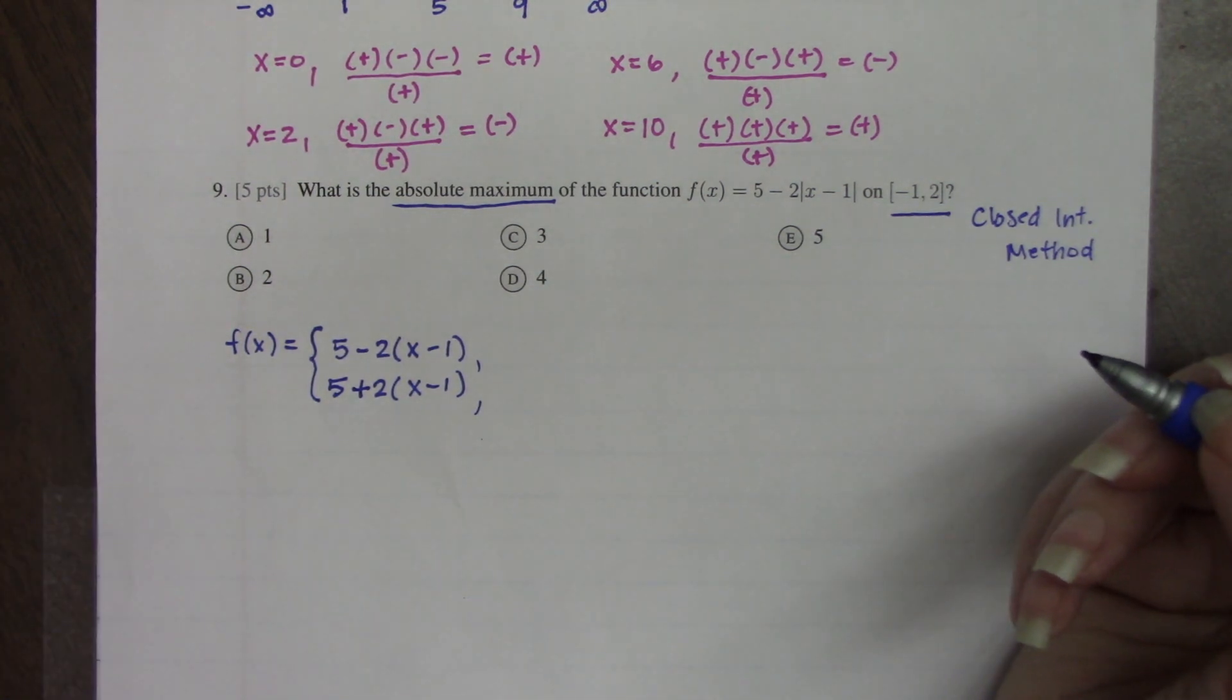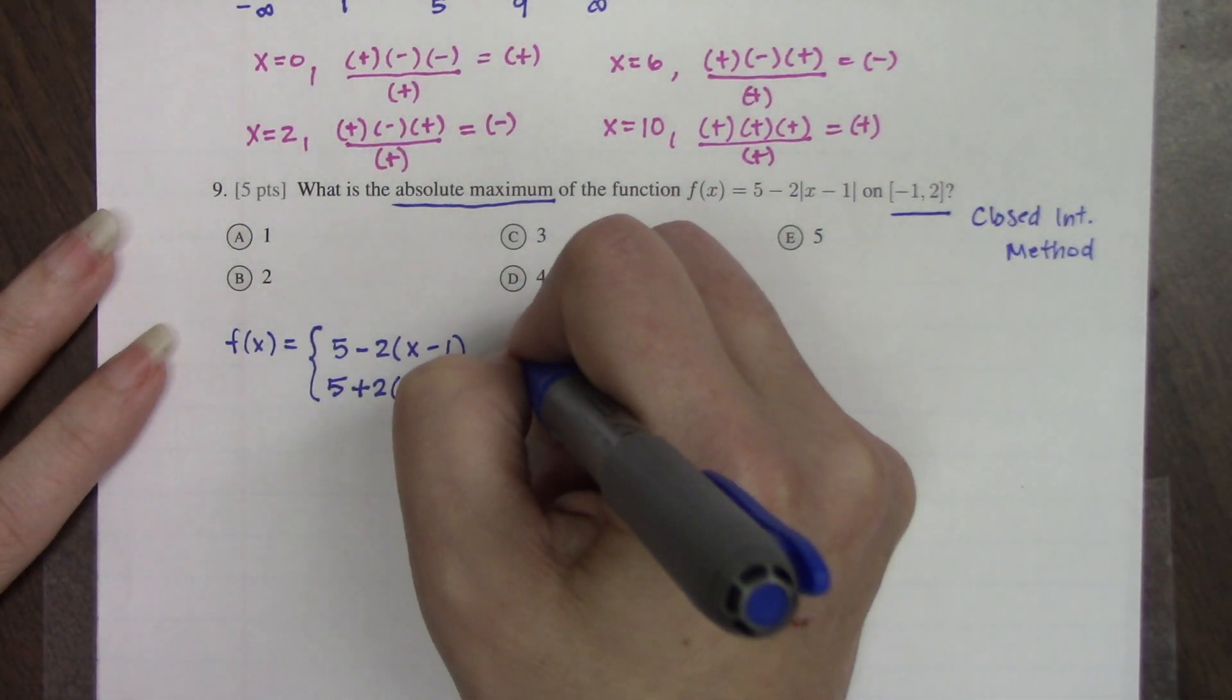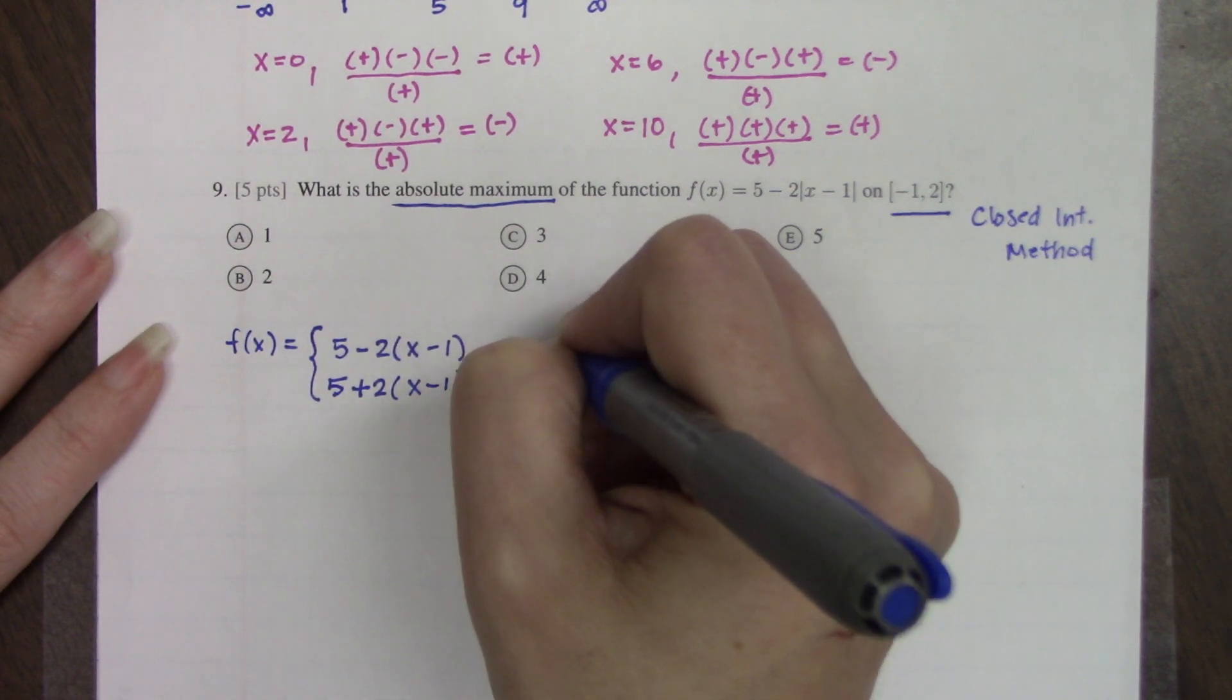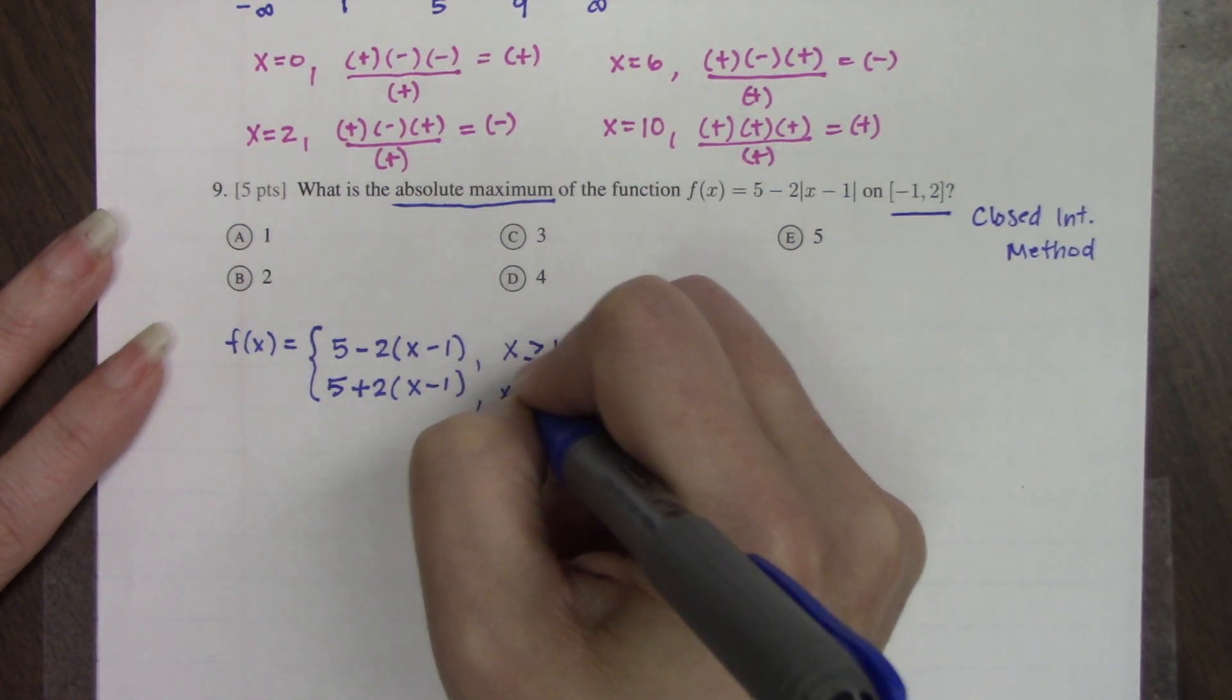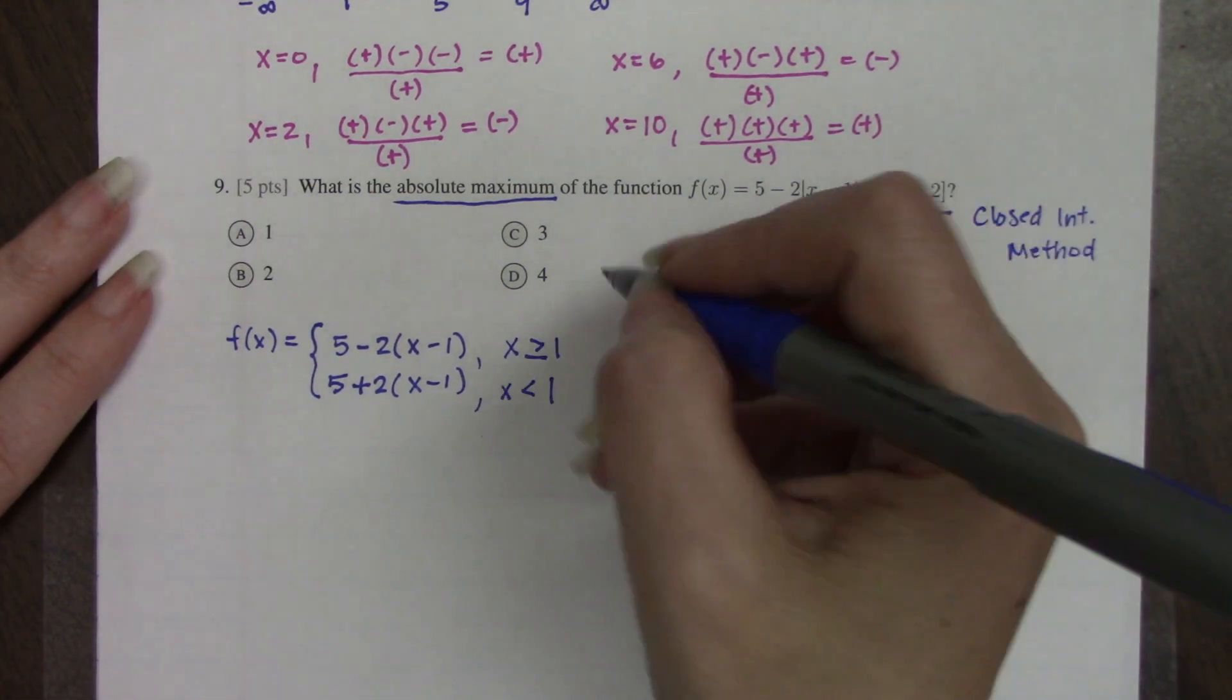Now absolute value functions have a sharp point or cusp, and at absolute value of x that occurs at 0. Well, the absolute value of x minus 1, it's just shifted to the right 1 unit. So this is going to represent when the graph is greater than or equal to 1, and this is going to represent when it's less than 1.